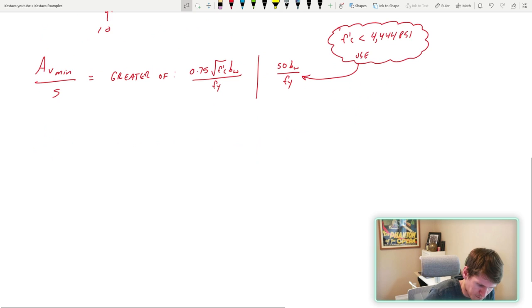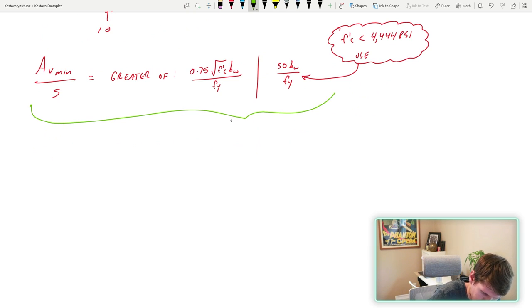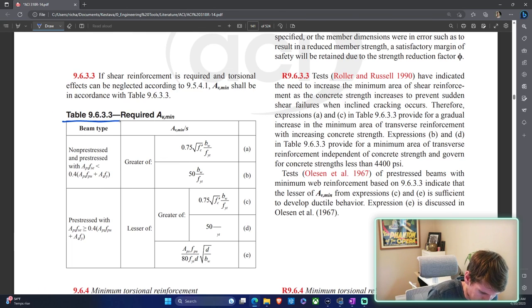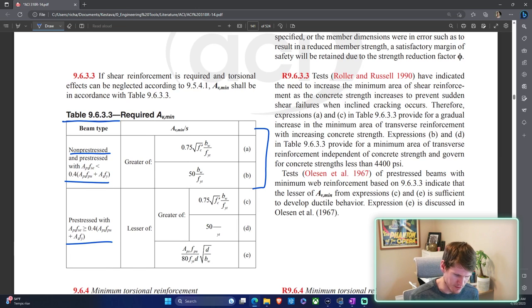Now let's pump the brakes real quick because this entire thing is when we are looking at shear demand only. If there are torsional loads, then it's different. All of that information in table 9.6.3.3, we are non-pre-stressed so we find ourselves right here. If we were pre-stressed, then you have to start doing some additional checks to make sure you know where you fall.